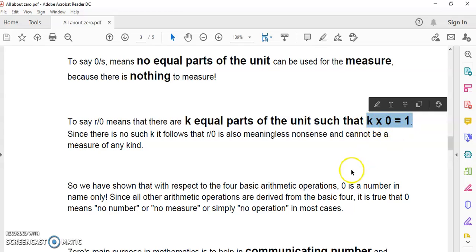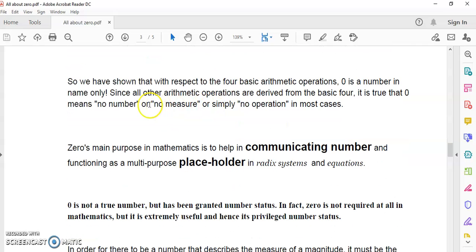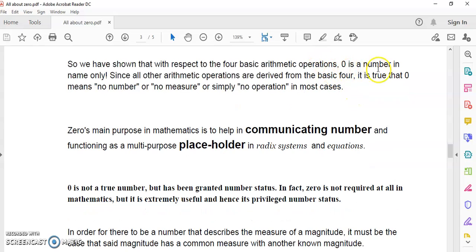So to say zero over S means no equal parts of the unit can be used for measure, because there is nothing to measure. Did you get that? So it seems like you're doing a measure with zero, but you're not, actually. There's no measure taking place whatsoever. And of course, to say R divided by zero means that there are K equal parts of the unit, such that K times zero is equal to one. Well, this is obviously absurd. Nothing times zero is equal to one. Not even the bullshit in mainstream theory about infinitesimals.